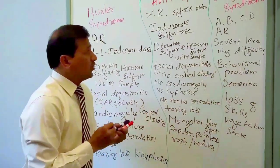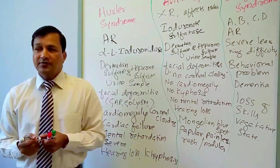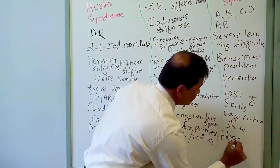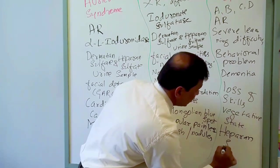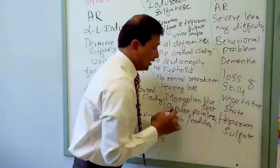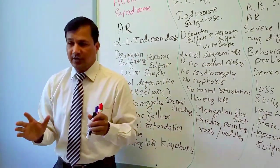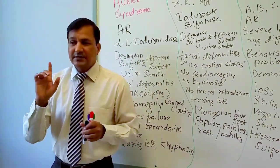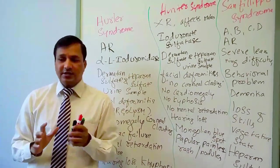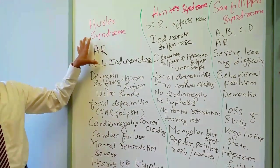The compound elevated in the urine sample of Sanfilippo syndrome is only heparan sulfate — remember this, as it can be a question. Now let's quickly revise all three disorders together. Hurler syndrome is autosomal recessive with alpha-L-iduronidase deficiency.